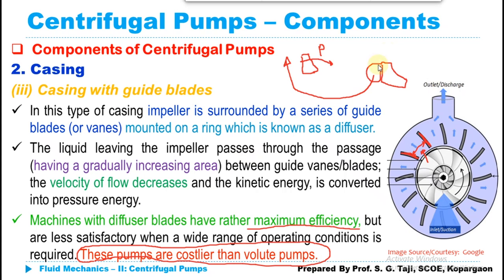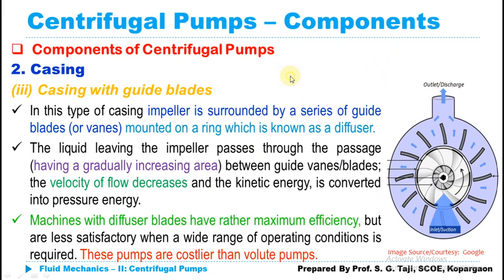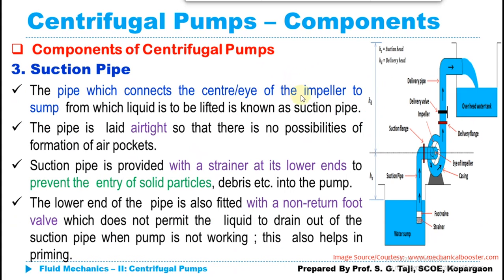The suction pipe connects the eye of the impeller to the water sump or source. It comes with a strainer at the bottom to prevent entry of debris or suspended solids that could damage the impeller vanes, and a foot valve which acts as a non-return valve preventing back entry of water when the pump is off. This pipe is generally airtight because it needs to develop suction head, and it takes water from the source toward the eye of the impeller.